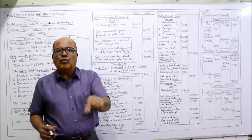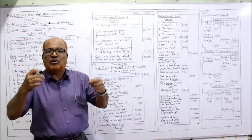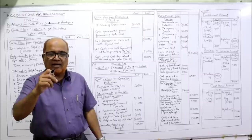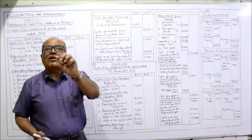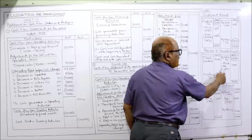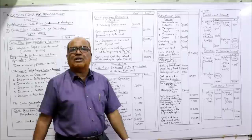Entry for provision made during the year: profit and loss account debit, provision for taxation credit. Write it down whenever you listen to this lecture — whatever points I am telling you, immediately write them down or you will forget. So credit side: by P&L account — provision made 9,000. Credit side total: 75,000 plus 9,000 equals 84,000.